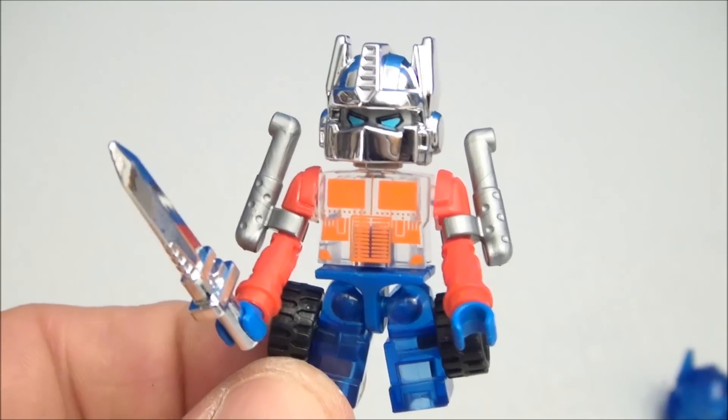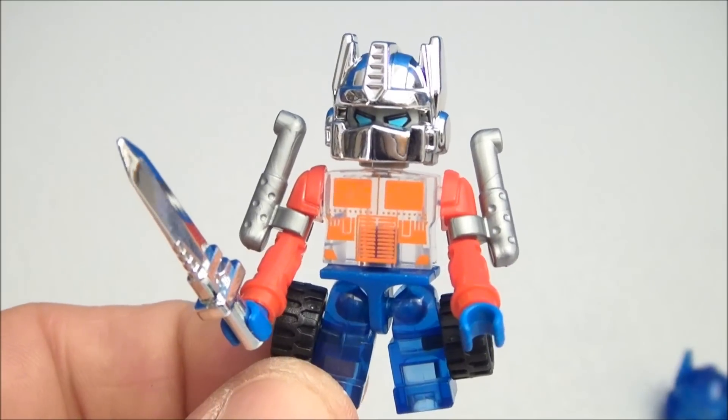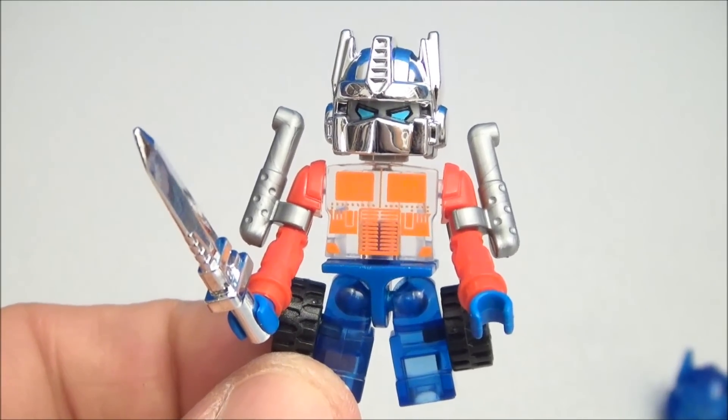Chrome helmet, ghost torso, weird long arms, chrome sword, smokestacks, clear legs with tires.